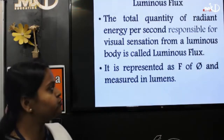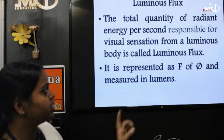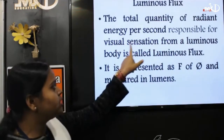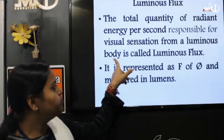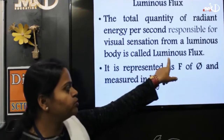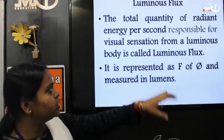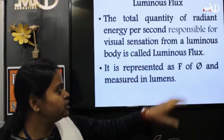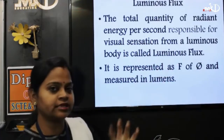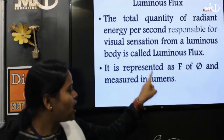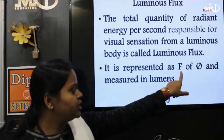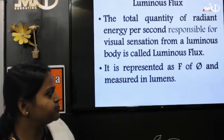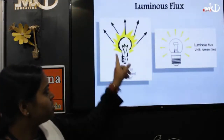What do you mean by luminous flux? The total quantity of radiant energy per second responsible for visual sensation from a luminous body is called luminous flux. That means the amount of radiant energy being produced or focused by a body, due to which we are seeing, is known as luminous flux. Its symbol is φ (phi) and its unit is lumen.